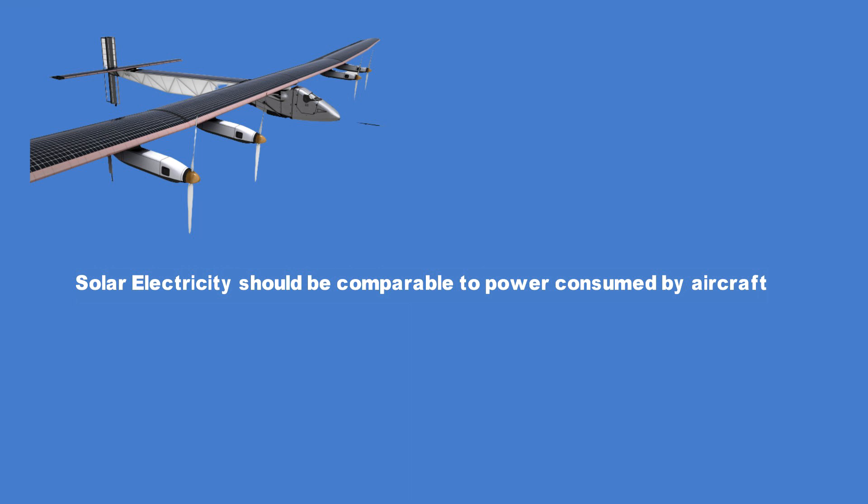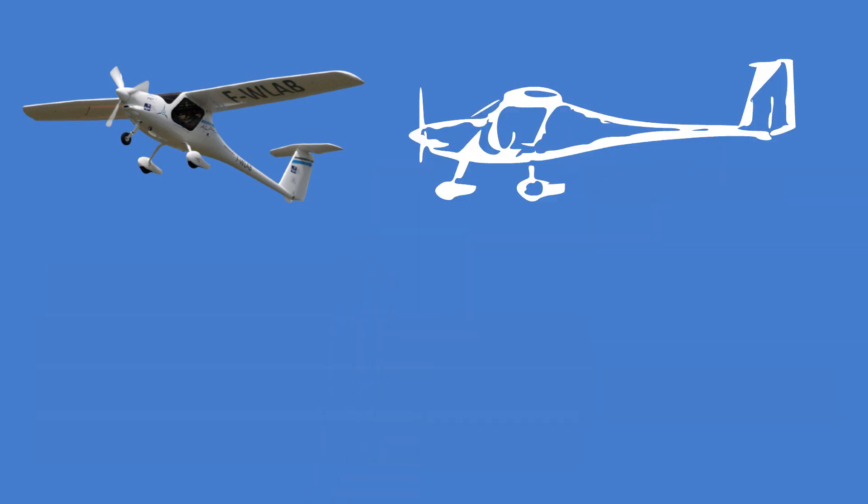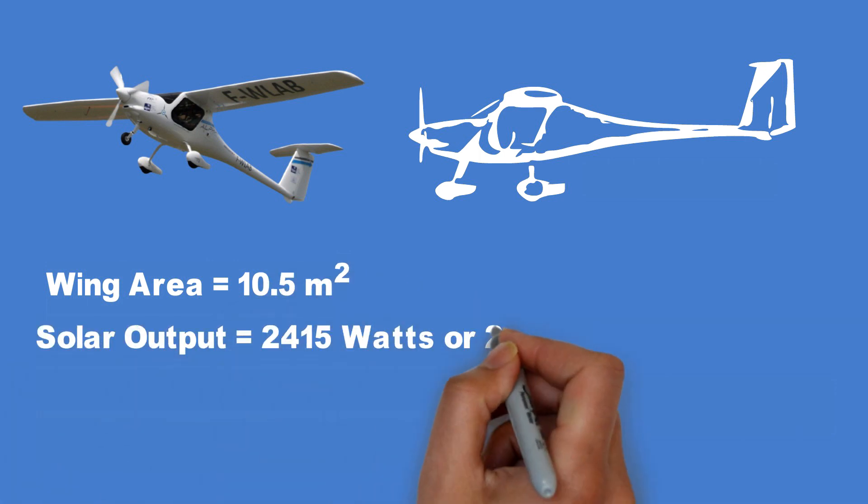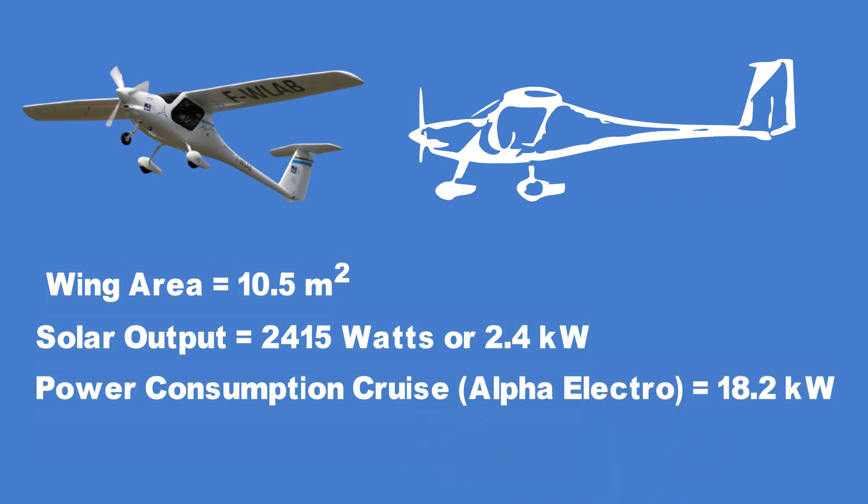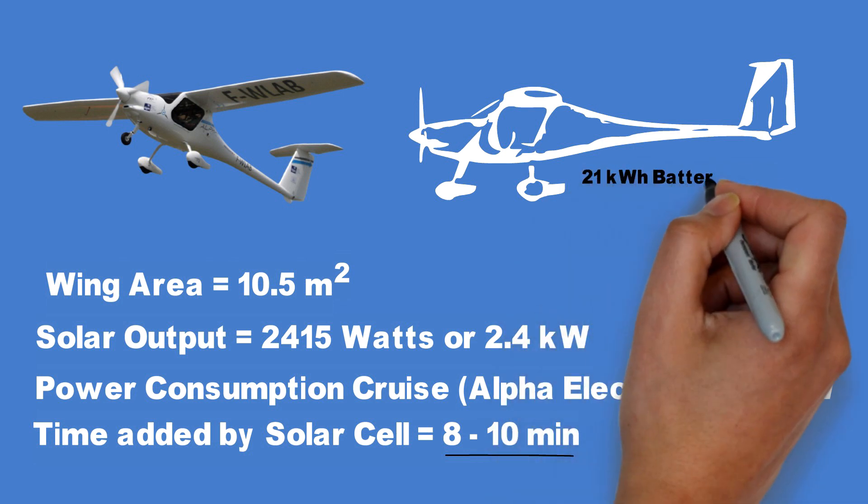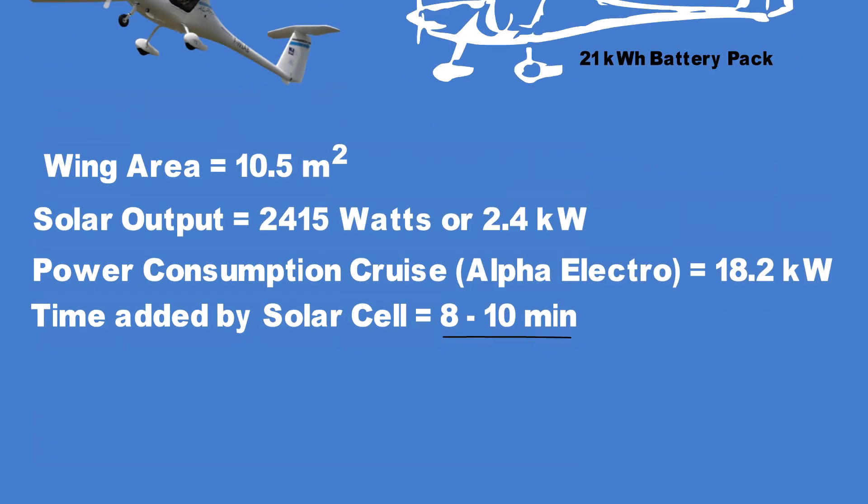To elaborate consider that we put solar cells on Pipistrel Alpha Electro that has a wing area of 10.5 square meter. The highest amount of power we can get with the most efficient solar panels would be then 2415 watts or 2.4 kilowatts at ground level. Even during the cruise mode the Alpha Electro is consuming around 18.2 kilowatts. The installation of solar cells on the wings would therefore only add just 8 to 10 minutes of flight time in the sunniest of days. This calculation is based on one hour of flight time of the Alpha Electro which has a 21 kilowatt hour battery pack. So in an aircraft like the Alpha Electro solar cells won't make much of a difference.